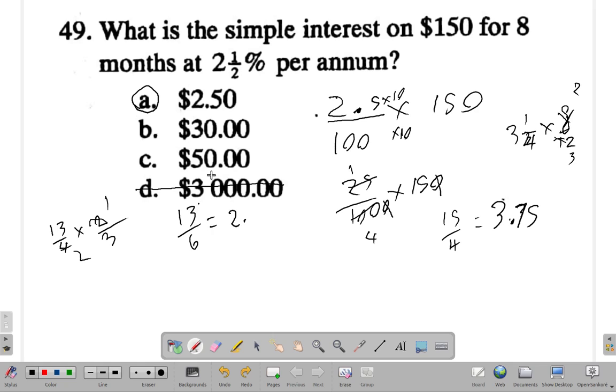Anyway, the answer for question 49 is A. And the other thing too, you could kind of reason it out. You know, $50 is one-third—that's more like 33% of $150 for a whole year.